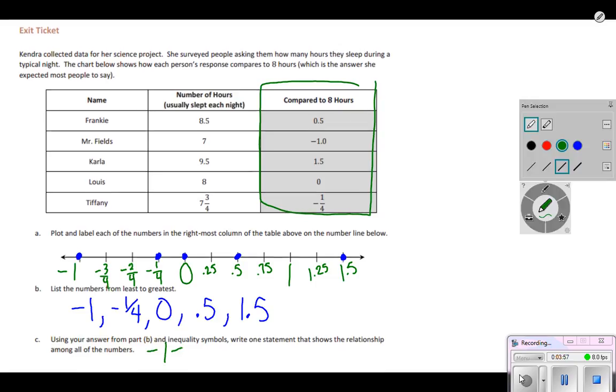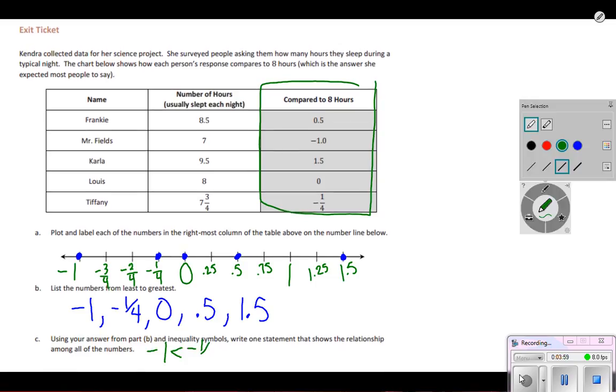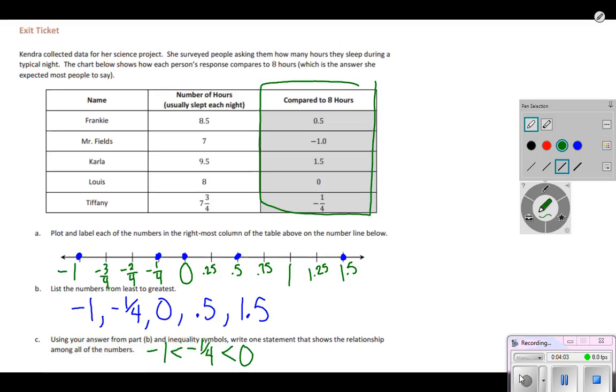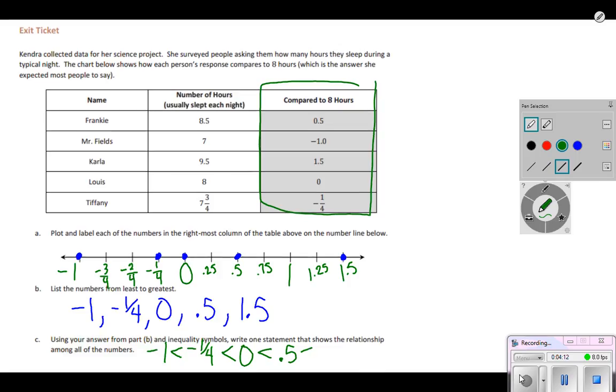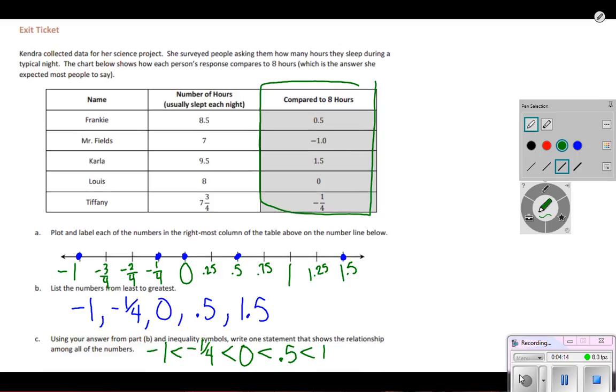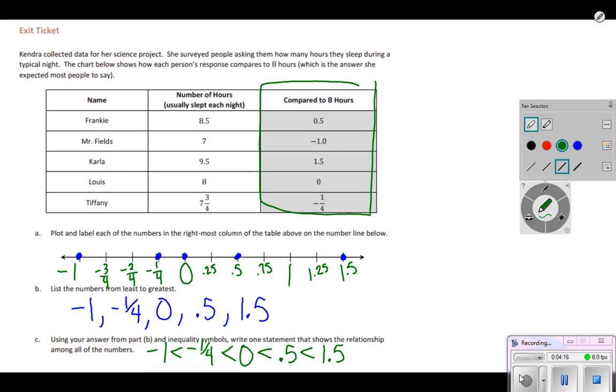Negative one is less than negative one fourth. Negative one fourth is less than zero. And notice that both of these negatives are less than zero, the way the order is set up. So zero is less than five tenths. Five tenths is less than one and five tenths. So now they're in order from least to greatest.